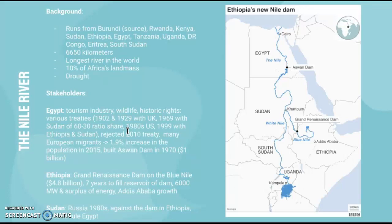There are many migrants to Egypt, which led to a 1.9% increase in population in 2015, creating a strain on water sources — meaning they do need that supply from the Nile. Egypt also built the Aswan Dam in 1970, costing 1 billion dollars, which is a very key establishment on the river.